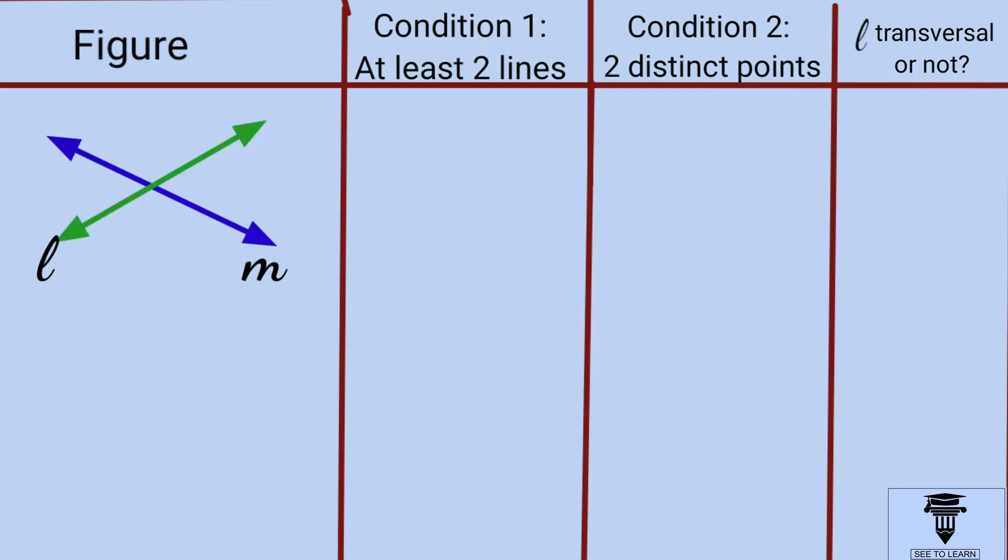Look at the first figure. Line L intersects only one line, so the first condition is not fulfilled. It does not satisfy the second condition as well. Therefore, L is not a transversal.